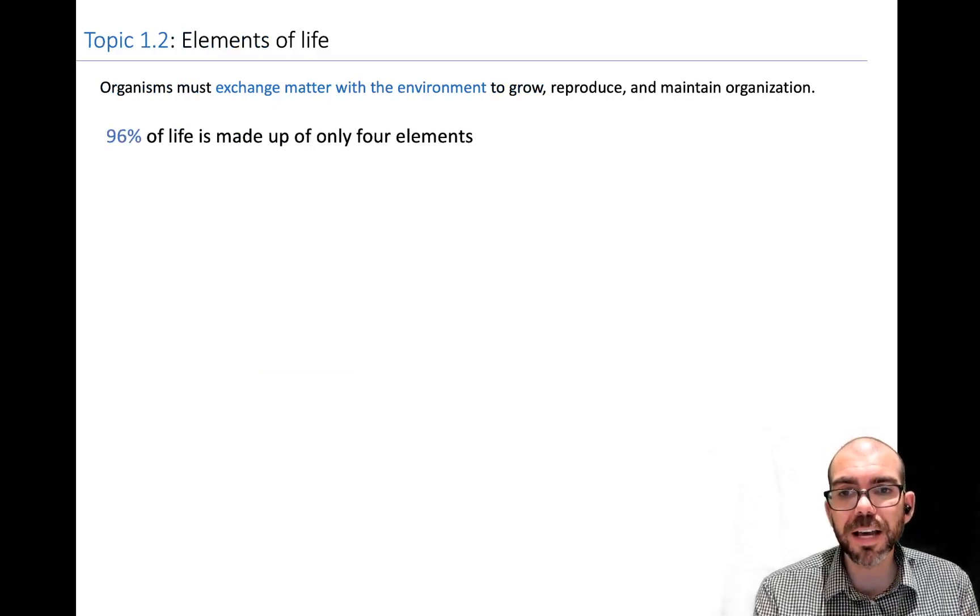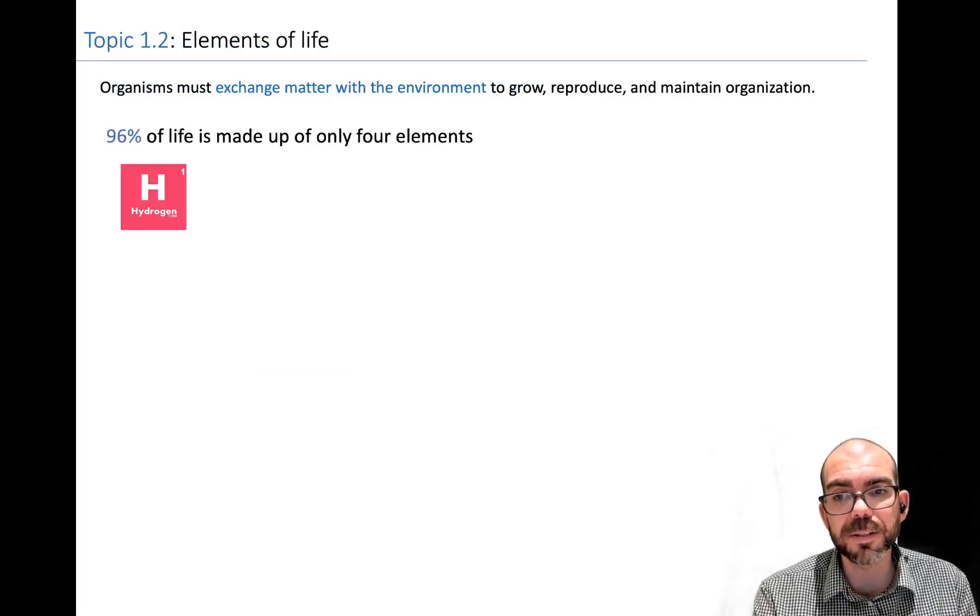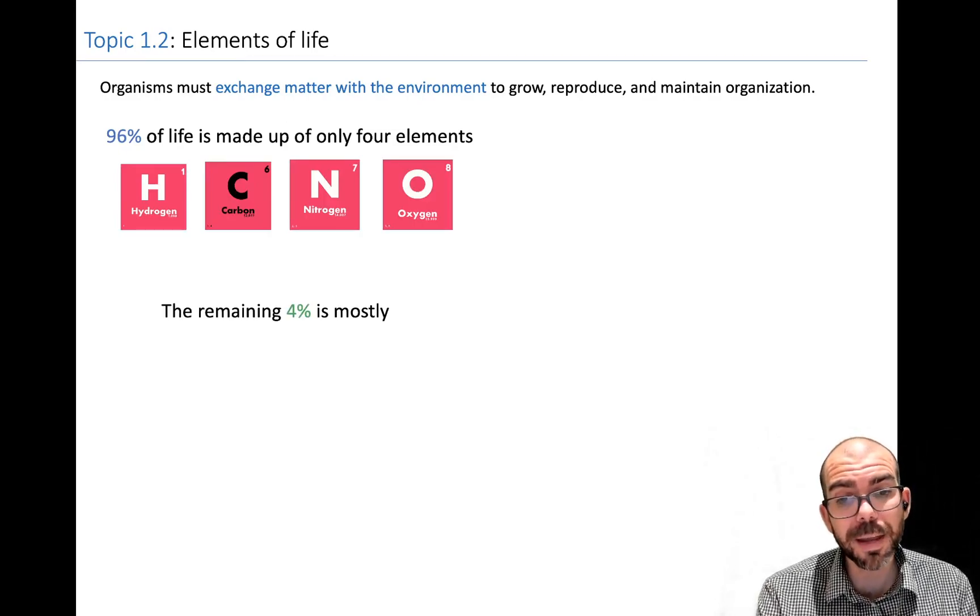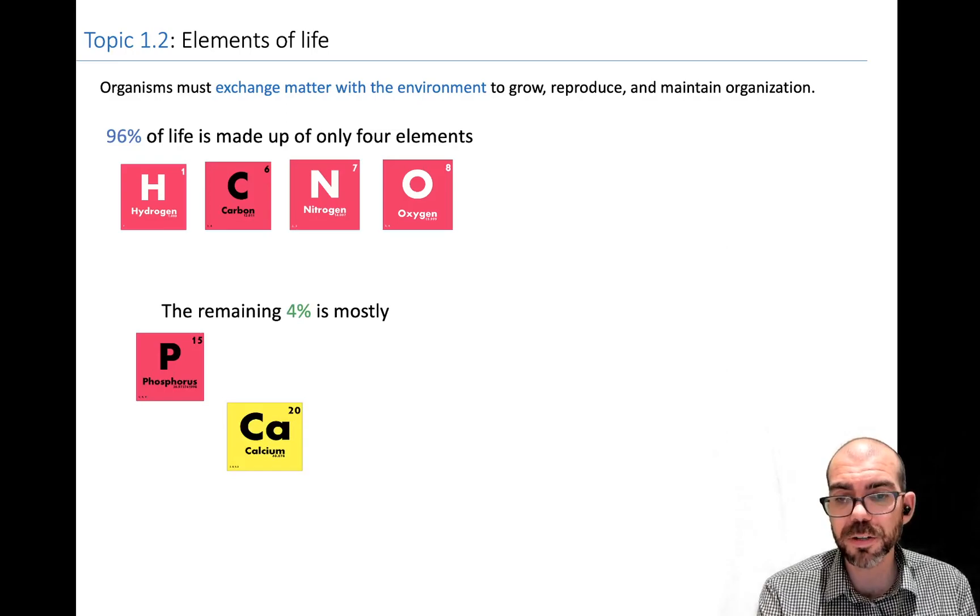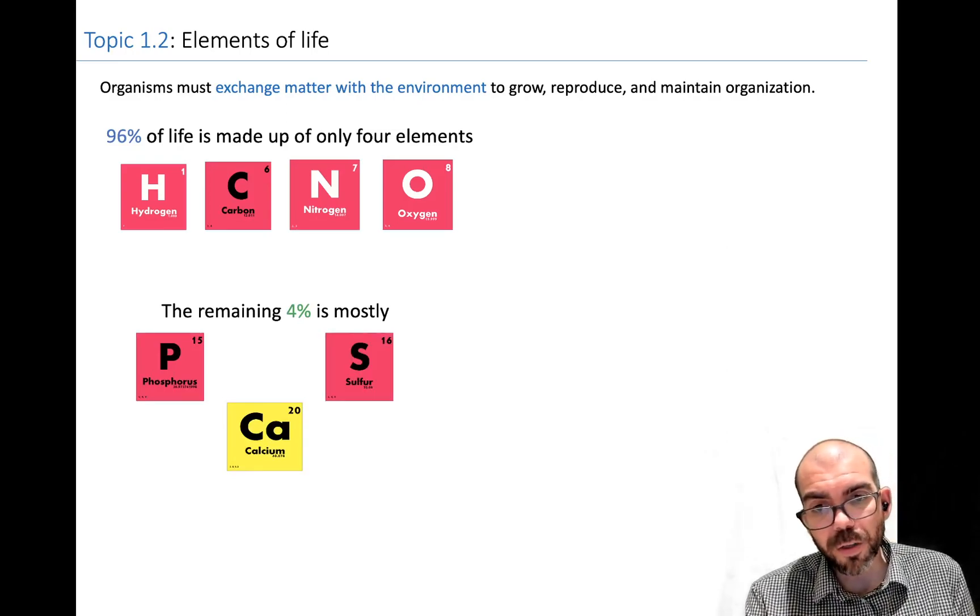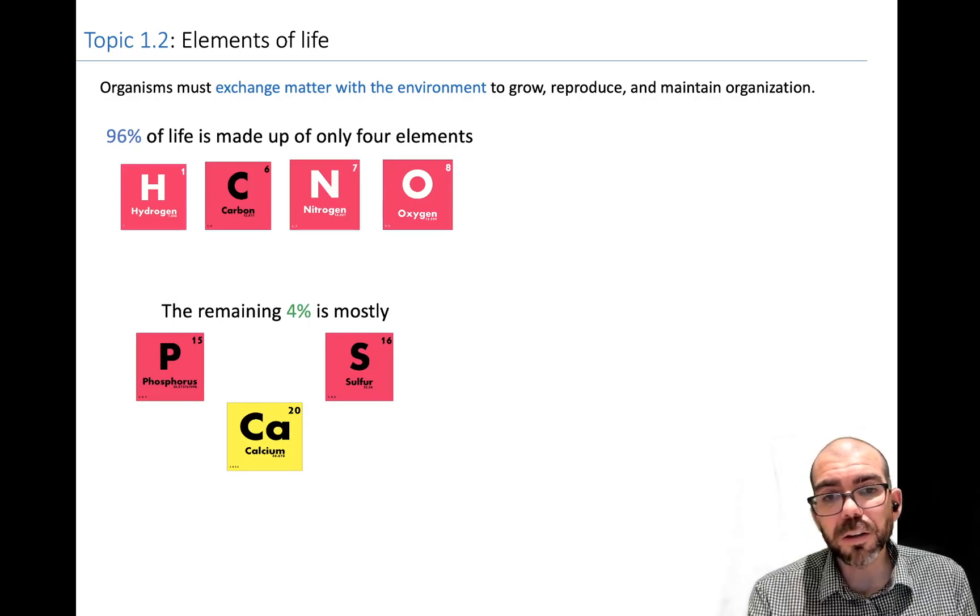96% of life is made up of only four elements: hydrogen, carbon, nitrogen, and oxygen. The remaining 4% is mostly phosphorus, calcium, and sulfur. That's it. Life is made of only those elements.